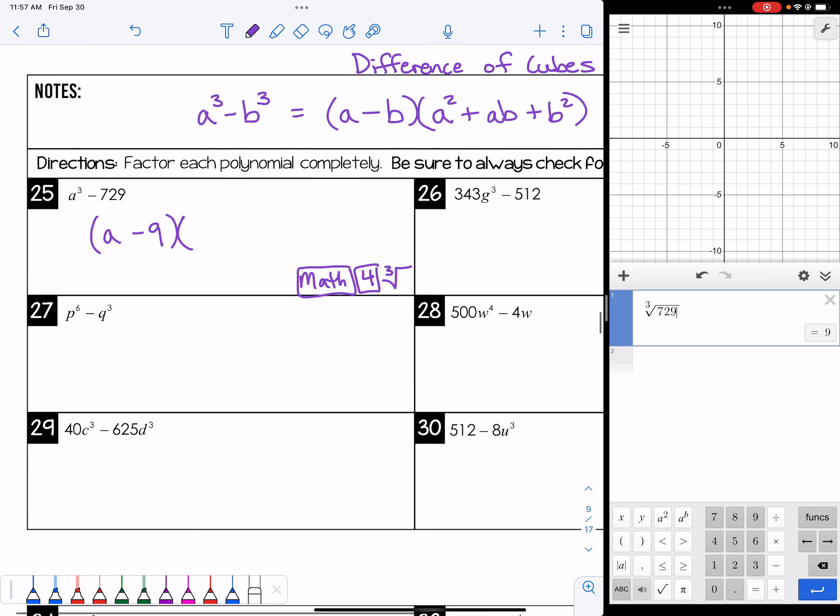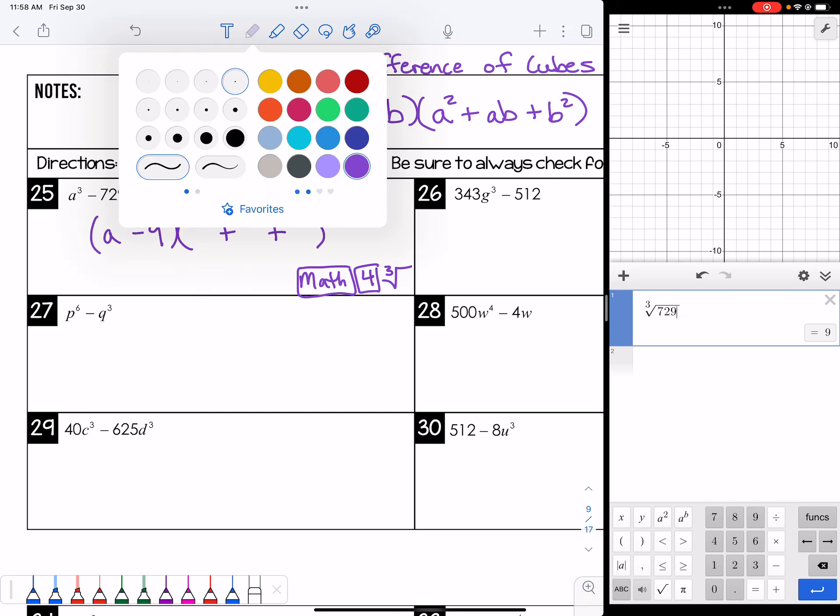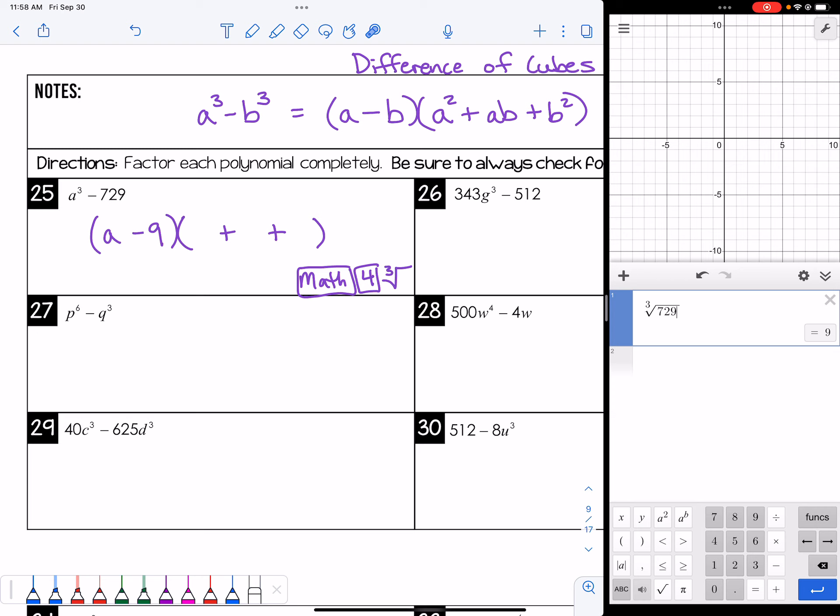So then you hit 729, and you see that the cube root of 729 is 9. You have a binomial and a trinomial factor that we're working on. Put the signs in place, so we have minus, plus, plus are always the signs for these. And then we need to square the first term in the binomial to get the first term in the trinomial. So that'll be a².